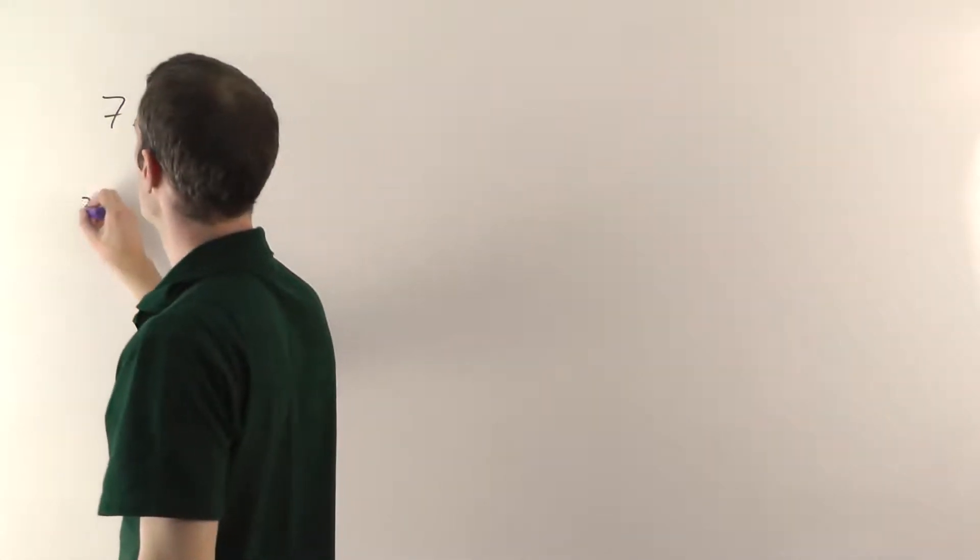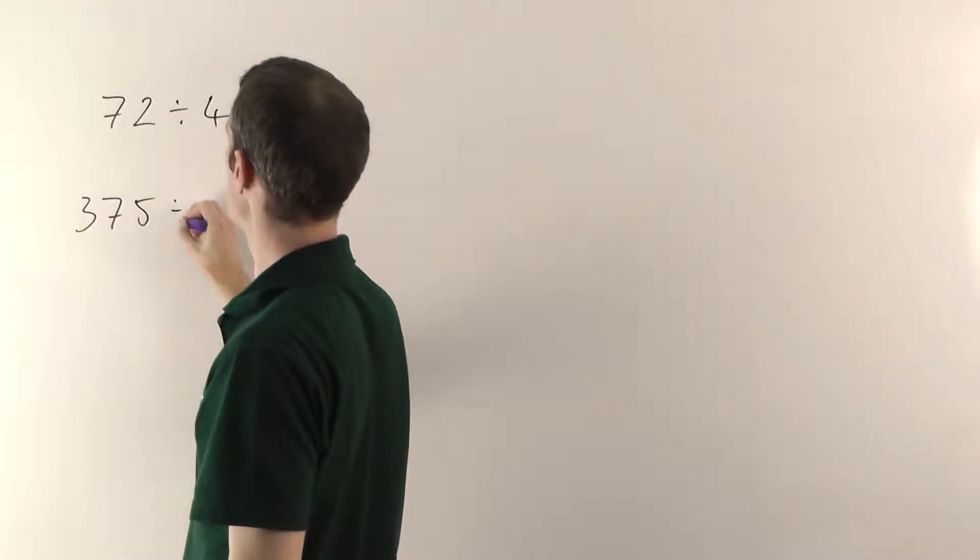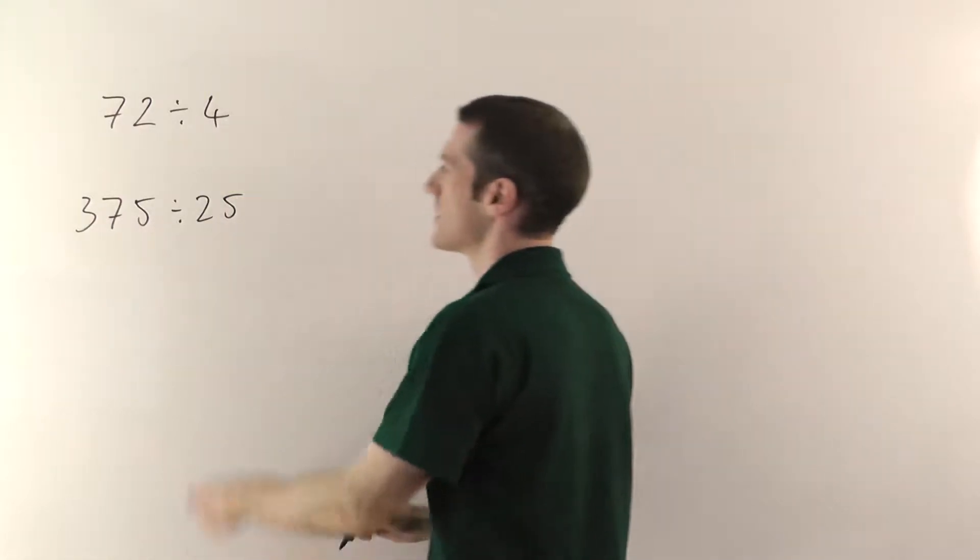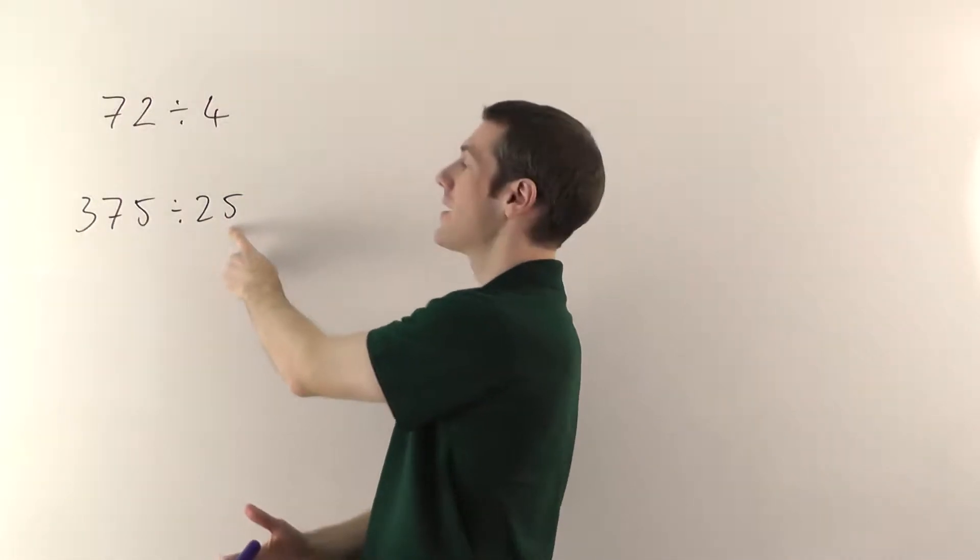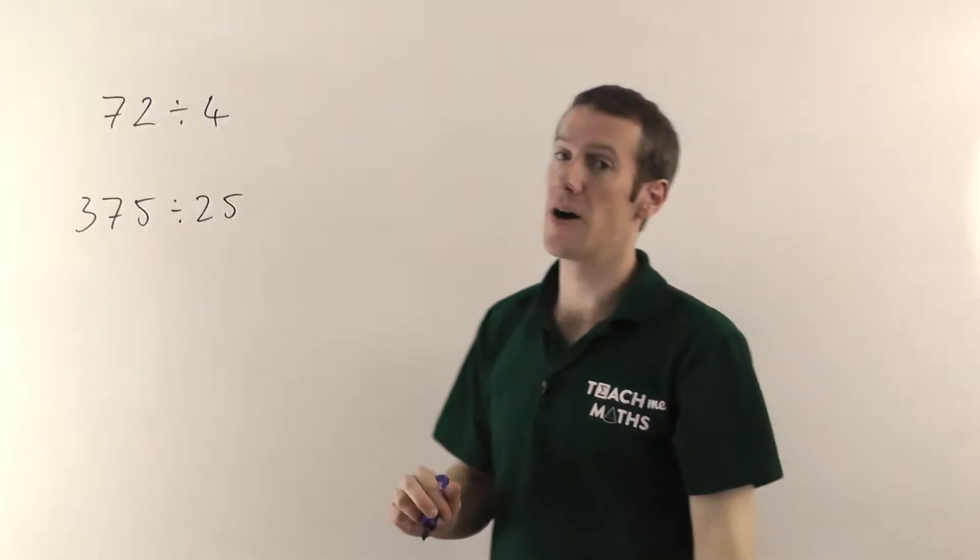However, if you're dividing by a number that's got more than one digit, like the 25 here, then that's called long division. So that's how you can tell the two apart.